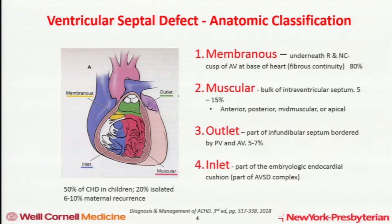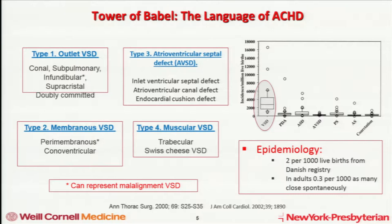The inlet septum VSDs, as alluded to, are part of the complex of atrioventricular septal defects — part of the endocardial cushion — and we'll be hearing about that next. Part of the challenge when learning congenital heart disease is that there are 50 different names for every single lesion, which makes things hard. I encourage you to look at the AHA/ACC 2008 guidelines. Just to give you a flavor of the different names for each type of VSD — this is just a sampling; I could have put up several more slides.